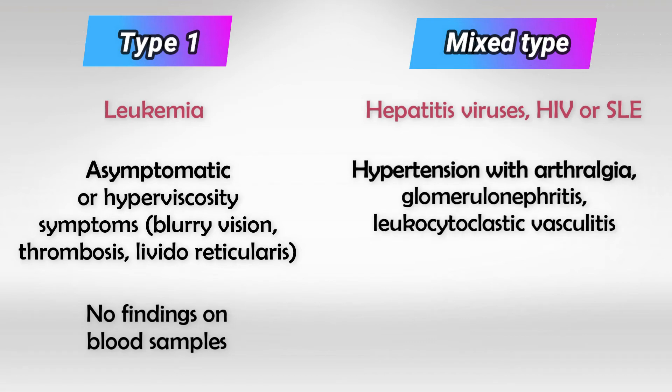We also see glomerulonephritis and leukocytoclastic vasculitis. The vasculitis looks very bad and it is very painful. In the mixed type we see a low complement 4.